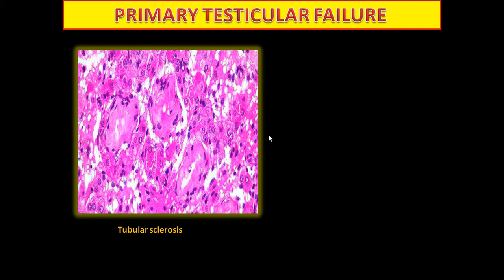Tubular sclerosis: the seminiferous tubules are narrow, sclerosed, and fibrosed, without germ cells or Sertoli cells.